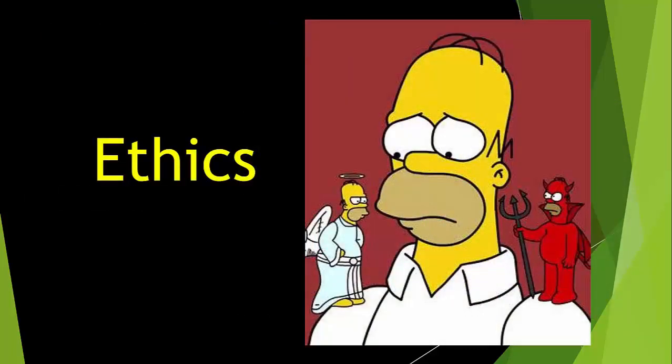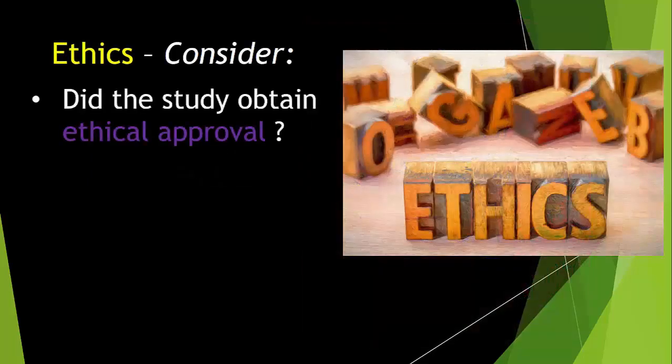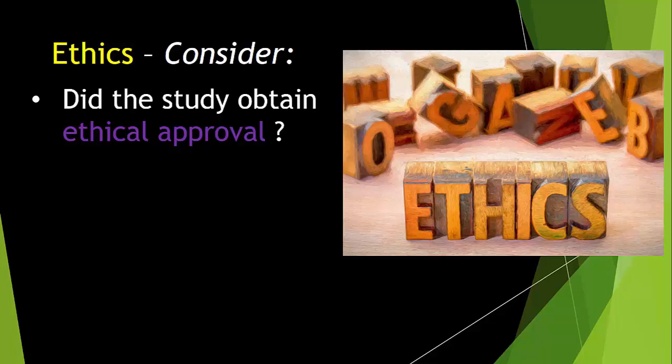Next is ethics. Now there may not be a separate section on ethics, but it does need to be explicitly addressed for any research that deals with people somewhere in the paper. So we need to consider, did the study obtain ethical approval? When working with people with both observational and interventions, the researchers need to clearly address their attention to the mental well-being and physical safety of the participants. If this cannot be seen in the paper, how are we to rule out that some form of coercion took place, no matter how well intended it was? So did the research receive approval from an authoritative ethics committee?